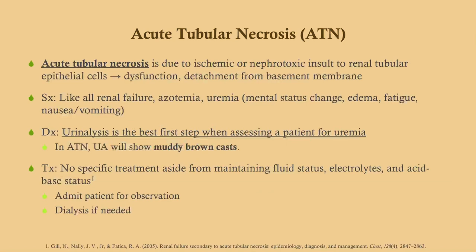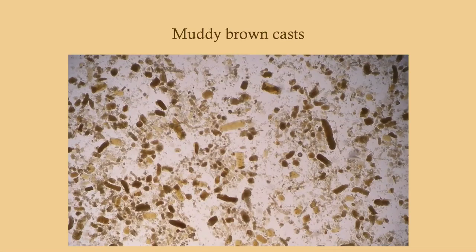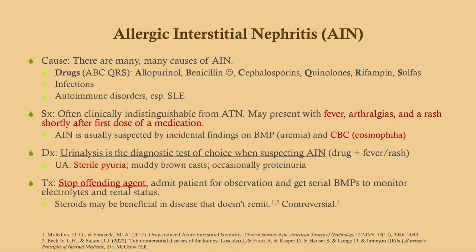In many instances you may not notice renal failure until you see the creatinine rise on labs, so your next steps are urinalysis plus serum magnesium, serum calcium, and renal ultrasound. In ATN, urinalysis shows muddy brown casts. There's no specific treatment aside from maintaining fluid status, electrolytes, and acid-base status. Patients may be admitted for observation, and dialysis used if needed.